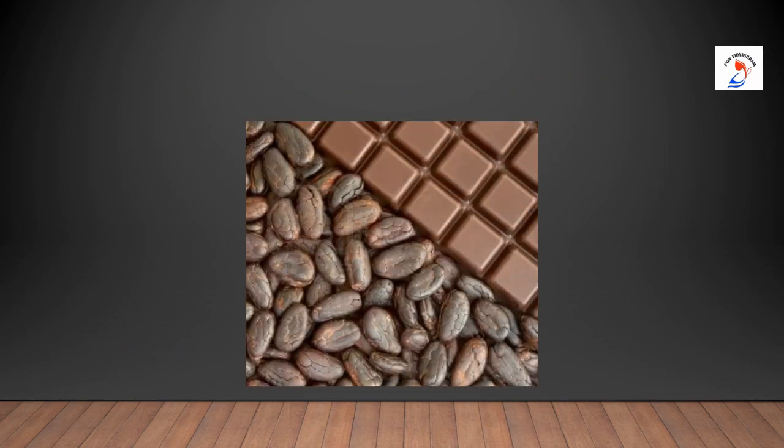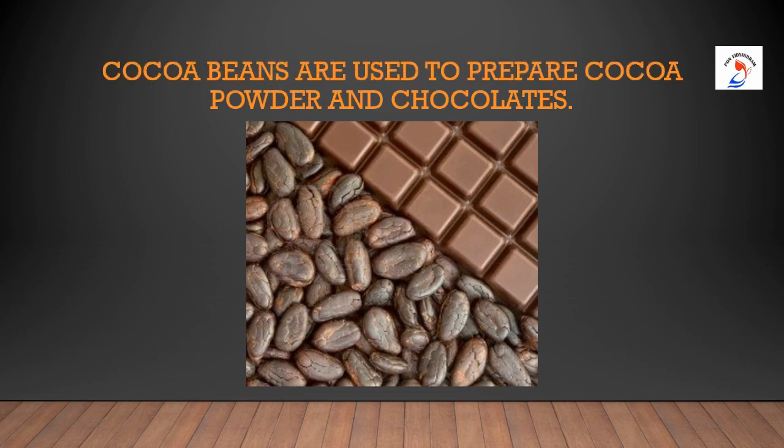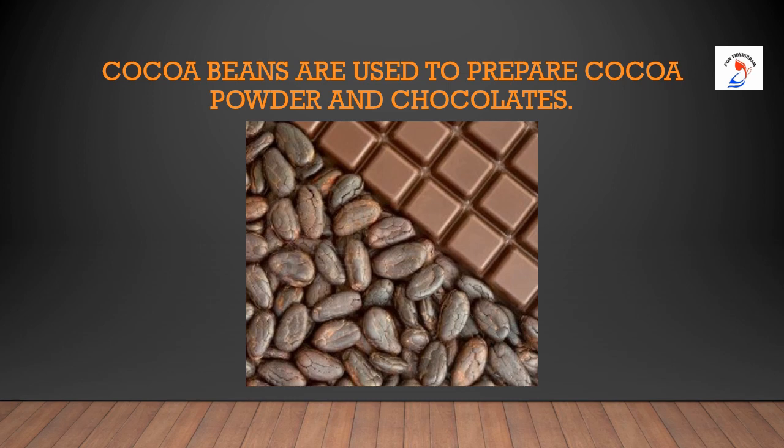What do you observe in the picture children? We see chocolate. From where do we get chocolates? Cocoa beans are used to prepare cocoa powder and chocolates. Next comes sugar. From where do we get sugar children? Sugar is obtained from the juice of the sugarcane plant.